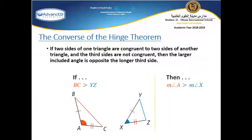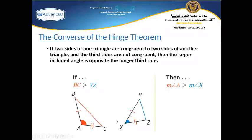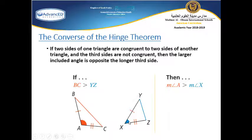Now the converse of the hinge theorem: if two sides of two triangles are congruent to two sides of the second triangle and the third sides are not congruent, then the larger included angle is opposite to the longer side. So if BC is bigger than YZ, then the opposite angle to BC — angle A — is bigger than the opposite angle to YZ — angle X.